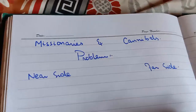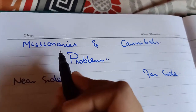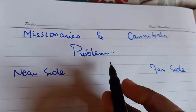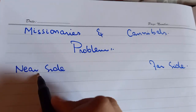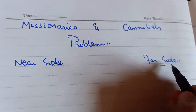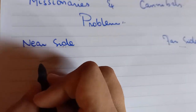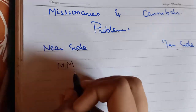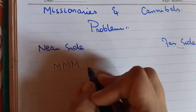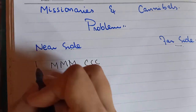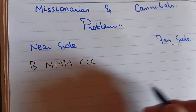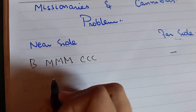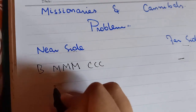Hello everyone, welcome to my channel. In today's video I am going to solve the missionaries and cannibals problem. This is the near side and this is the far side. Let's start — we have three missionaries, three cannibals, and one boat here at the near side. At the far side there is nothing. Let's start to solve it.